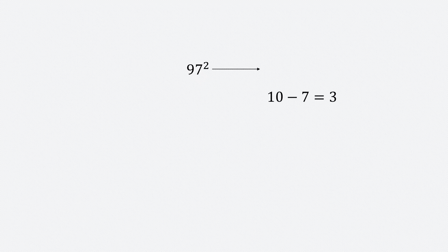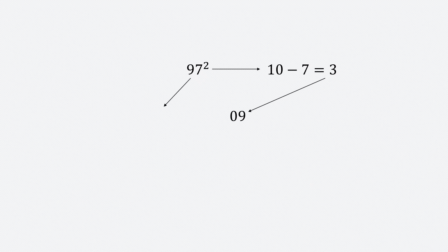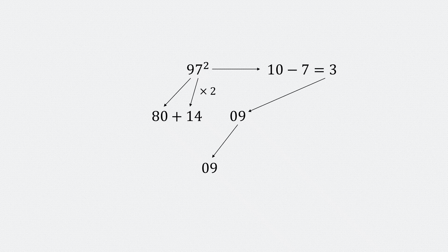Another example is 97 squared. We won't square 7 directly — do 10 minus 7 first, you get 3. Square 3, you get 09. 9 squared minus 1, so 80. And now, do 2 times 7, which is 14. Add 14 to 80. So, you have 09 and 94. The square of 97 is 9409.